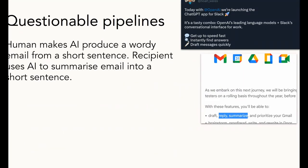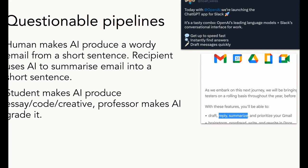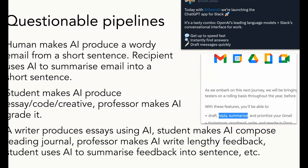Things are going to get weird. These things are now integrated into, for example, Slack and Gmail. So now we can have scenarios like: a human makes AI write a long email from a little prompt; the recipient uses their AI to summarize that lengthy email into one sentence. Or equivalently, a student makes AI produce some code or essay or creative work, and the professor makes AI grade it. Let's take one step further: a writer produces an essay using AI; a student makes AI compose a reading journal; a professor makes AI write lengthy feedback; the student uses AI to summarize that feedback into one sentence. These things are happening. This is where we are.